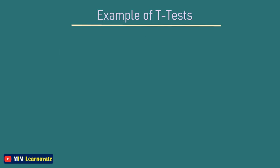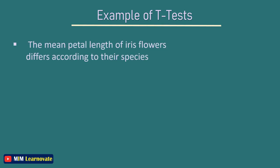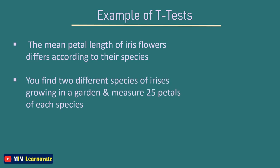Example of T-test: you want to know whether the mean petal length of iris flowers differs according to their species. You find two different species of irises growing in a garden and measure 25 petals of each species. You can test the difference between these two groups using a T-test.